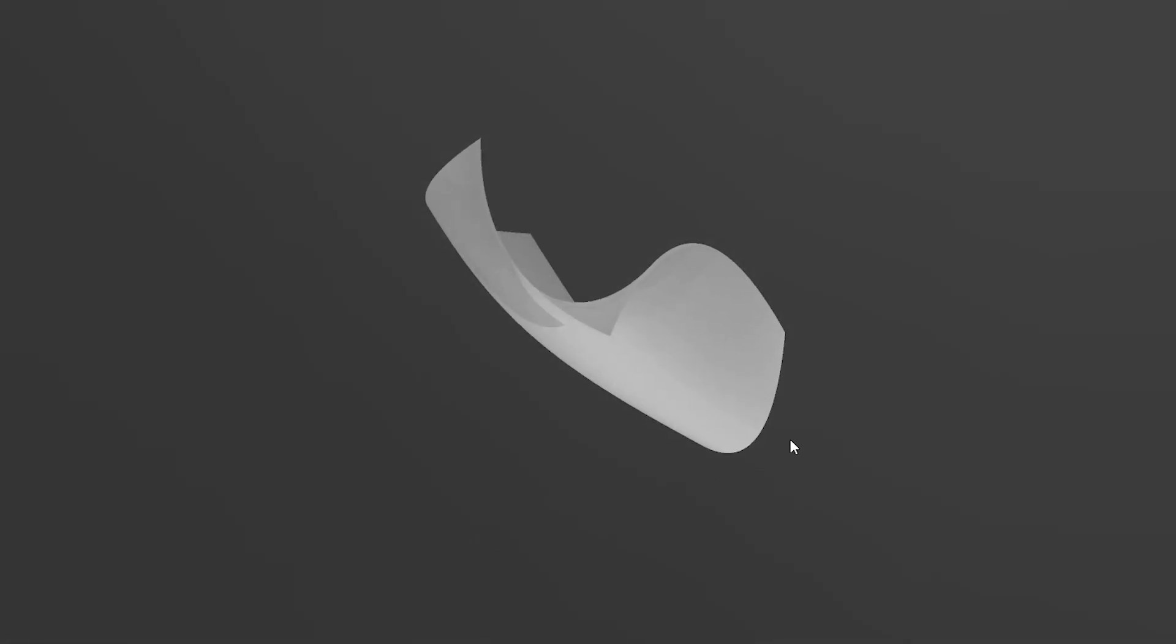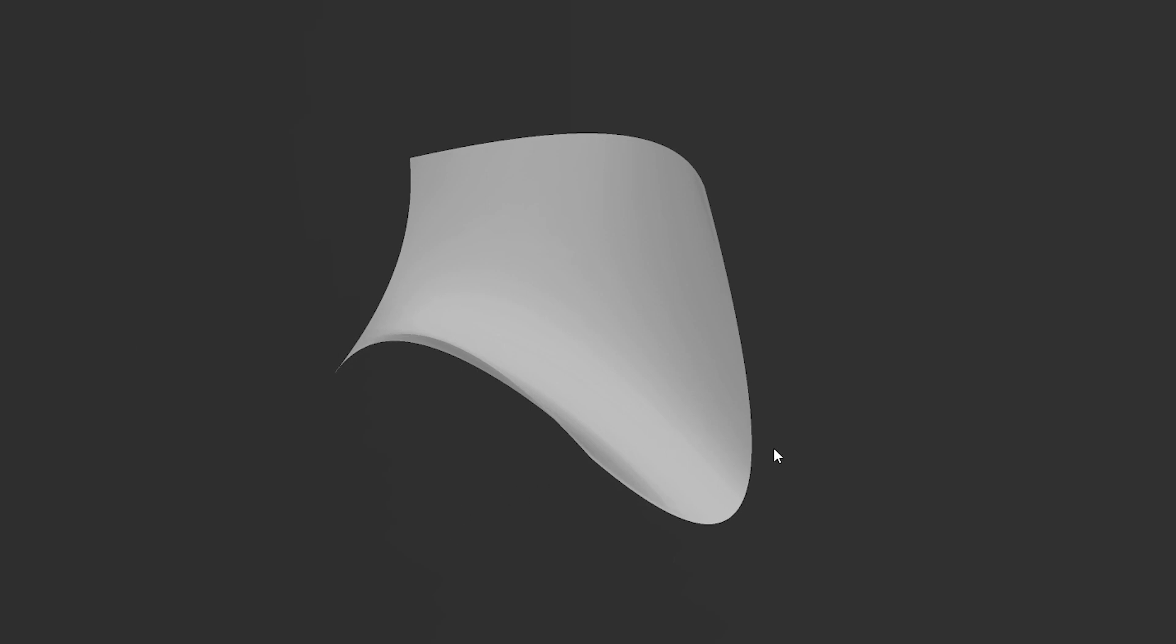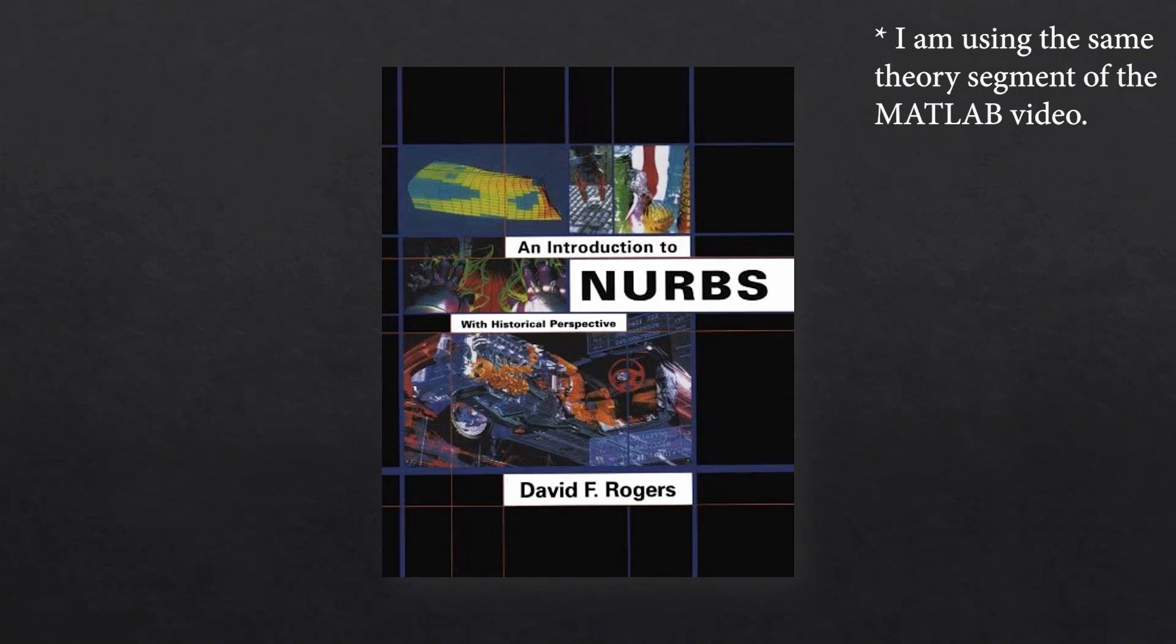I expect that you're already familiar with what a Bezier surface is and also know basic Python since I won't go into depth explaining the math of this. I will be using this book as reference. It is called An Introduction to NURBS with a Historical Perspective by David Rogers.